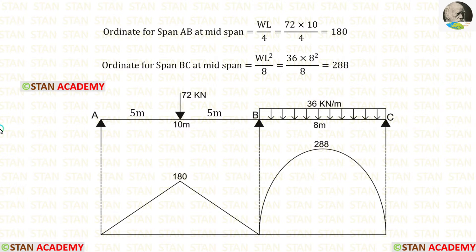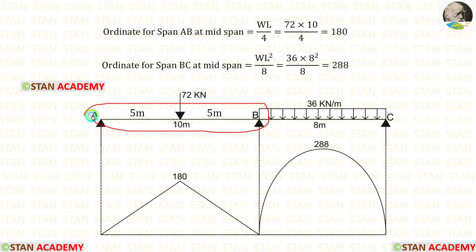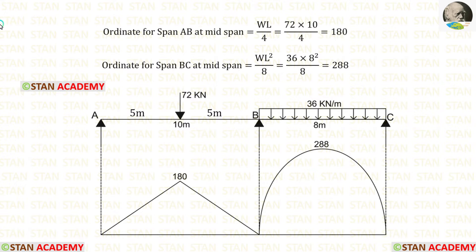Now let us make the ordinates. For making the ordinates, we have to assume each span as a separate simply supported beam. First, let us take span AB and assume that it is simply supported. In a simply supported beam, if the point load is acting on the center, the maximum bending moment occurs at the center.